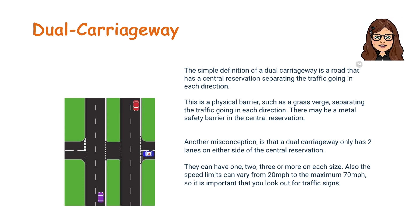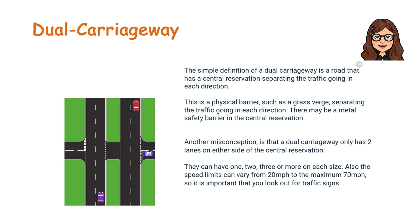The simple definition of a dual carriageway is a road that has a central reservation separating the traffic going in each direction. This is a physical barrier such as a grass verge, and there may also be a metal safety barrier in the central reservation. Another misconception is that a dual carriageway only has two lanes on either side — they can have one, two, three or more on each side.